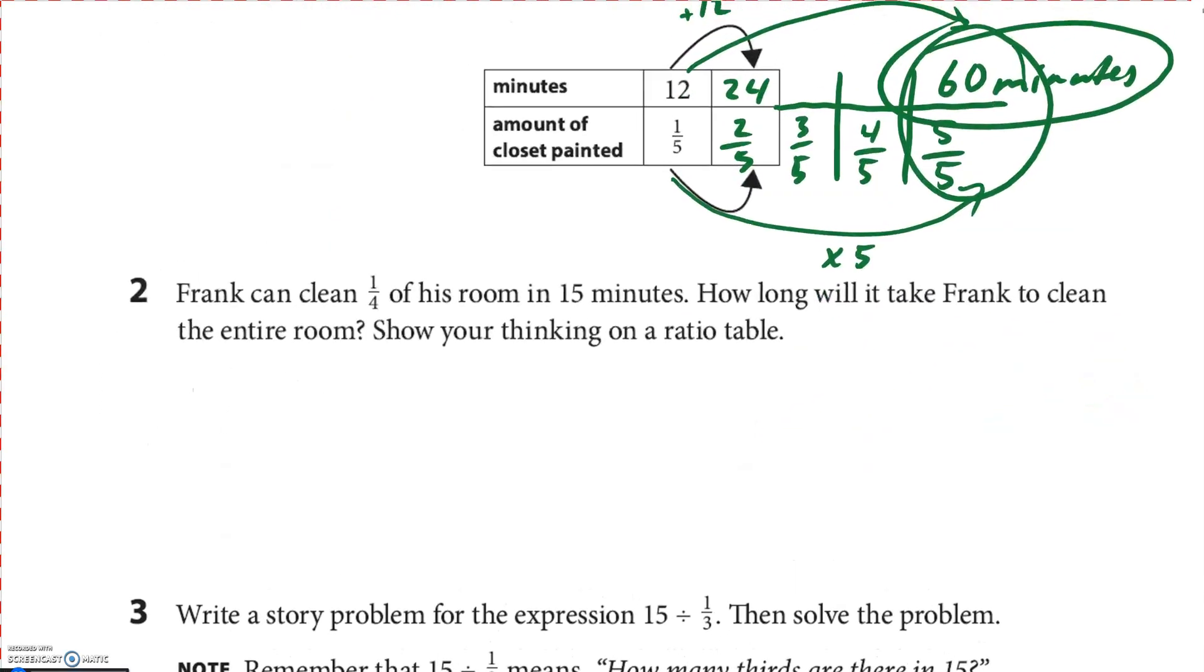Alright, so now they don't give us the ratio table. Frank can clean one-fourth of his room in 15 minutes. How long will it take Frank to clean the entire room? So I'm going to make a ratio table. And this is minutes, I'm just going to write M-I-N. And then this is the clean room. And he has one-fourth, right? One-fourth.